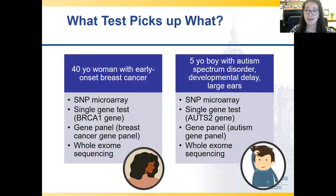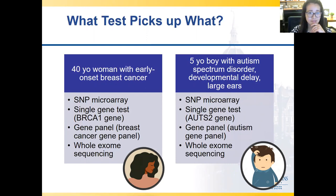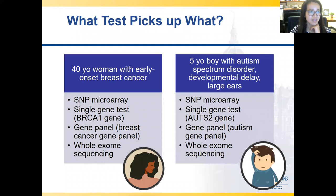Let's do a quick quiz. For a woman with early onset breast cancer, which test would you send? People are saying single gene BRCA — that seems like a good answer. Gene panel is also a good answer. Most clinical cancer genetic counselors will be ordering a gene panel, because it's not just BRCA1 — there's BRCA2, PTEN, and many genes that can increase the risk for early onset breast cancer.